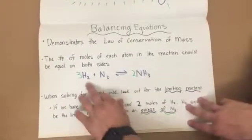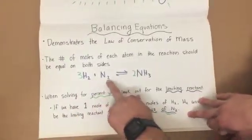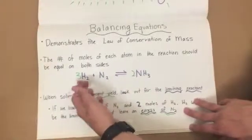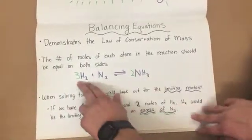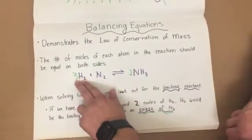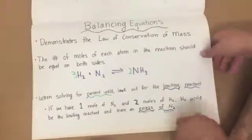For example, if we have hydrogen gas reacting with nitrogen gas to produce ammonia, we have to add in the coefficients 3 and 2 to ensure that there are the same numbers of hydrogen atoms and nitrogen atoms on both sides of the reaction.